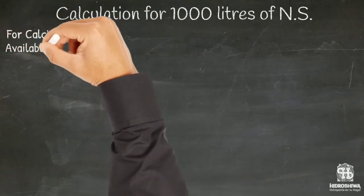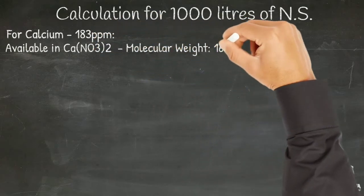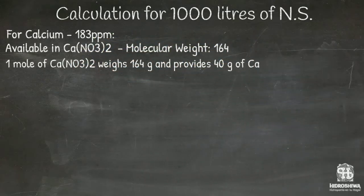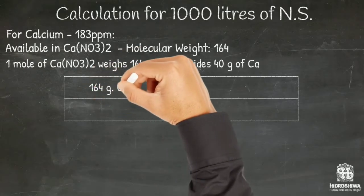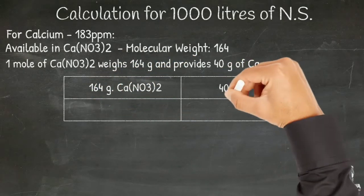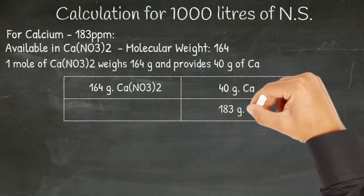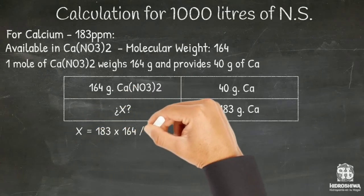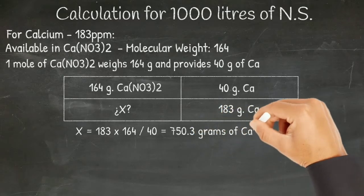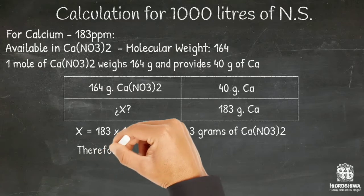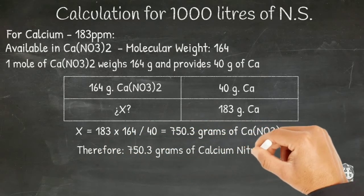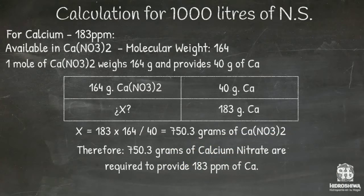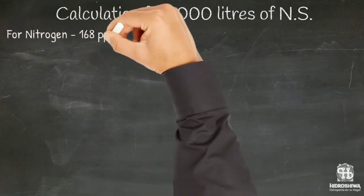We start with calcium. It is available in calcium nitrate, and its molecular weight is 164. One mole of calcium weighs 160 grams and provides 40 grams of calcium. We then calculate the amount of calcium nitrate to provide 183 grams of calcium: X equals 183 times 164 divided by 40, giving 750.3 grams of calcium nitrate required to make up 183 parts per million of calcium.